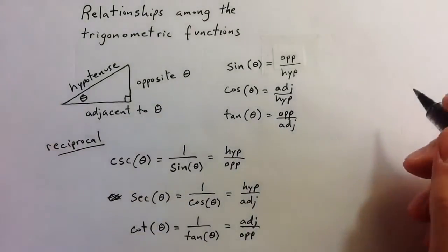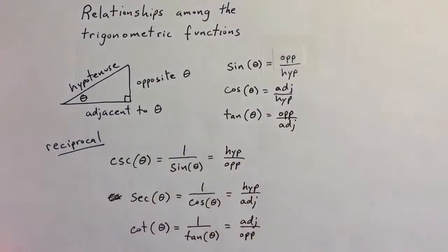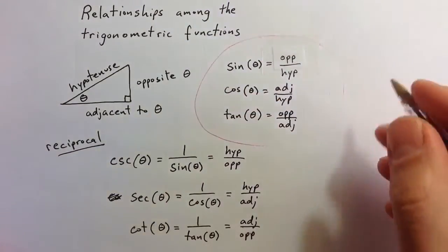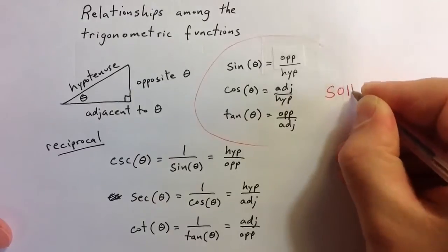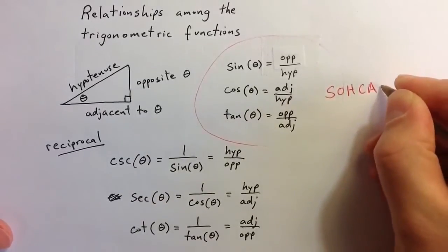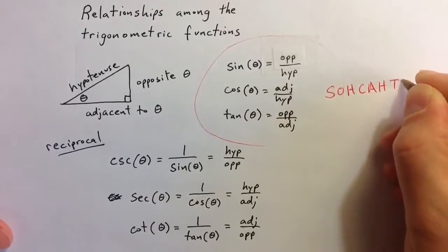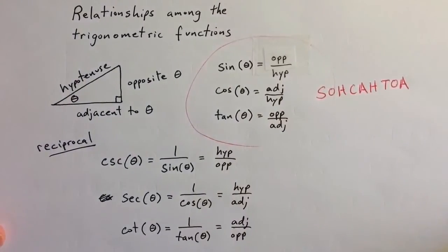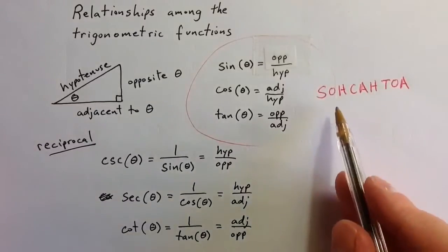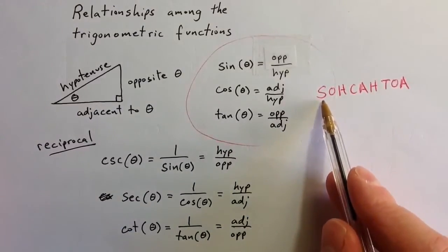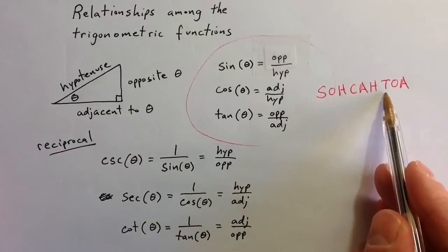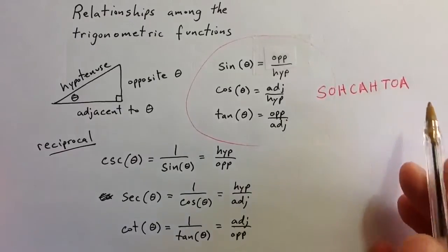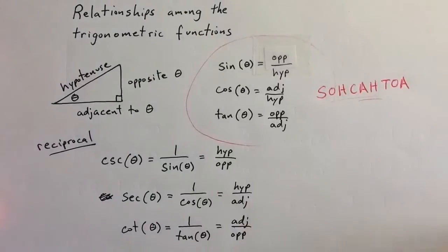To remember the six ratios that we have here, the three more basic ratios, the mnemonic that you may have heard before is SOHCAHTOA, which is kind of an easy word to remember. The letters tell us that sine is the opposite over hypotenuse, cosine is the adjacent over hypotenuse, and tangent is the opposite over the adjacent side. So that word can help summarize those three more basic trigonometric ratios.